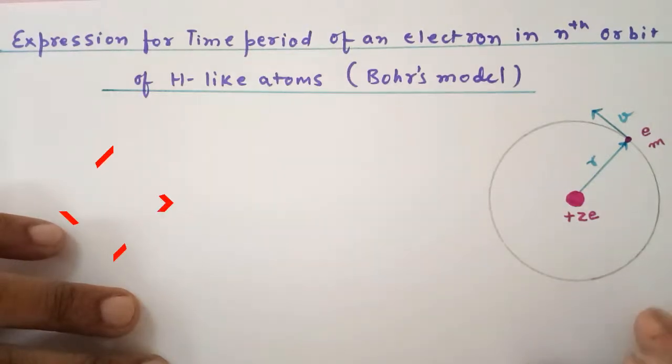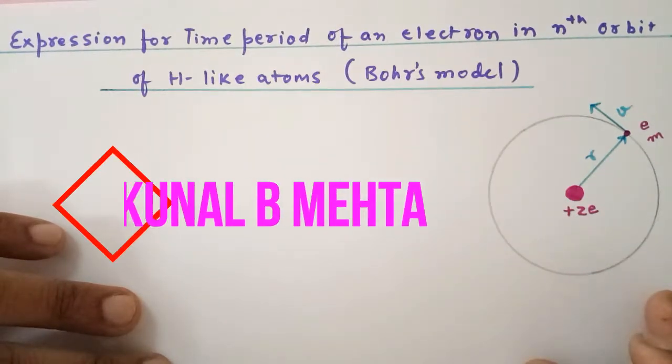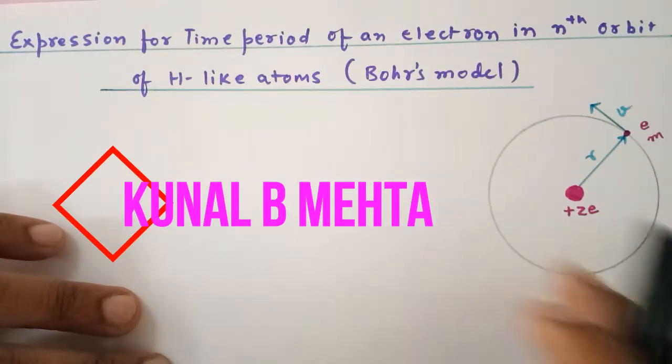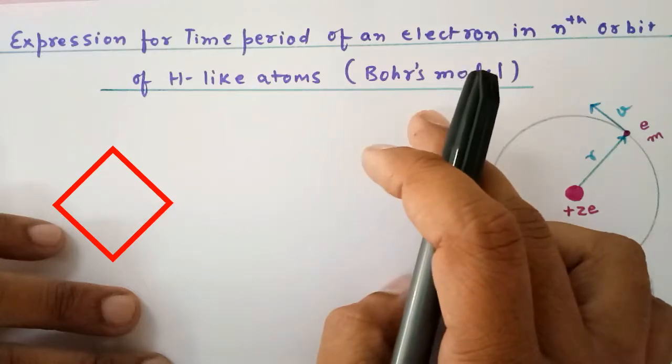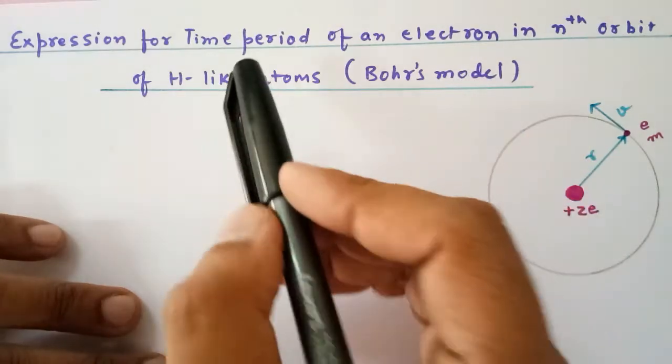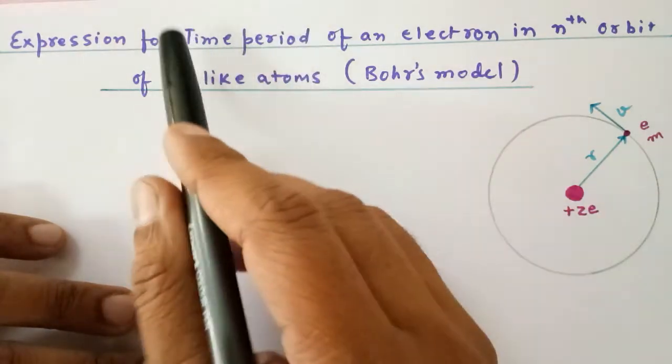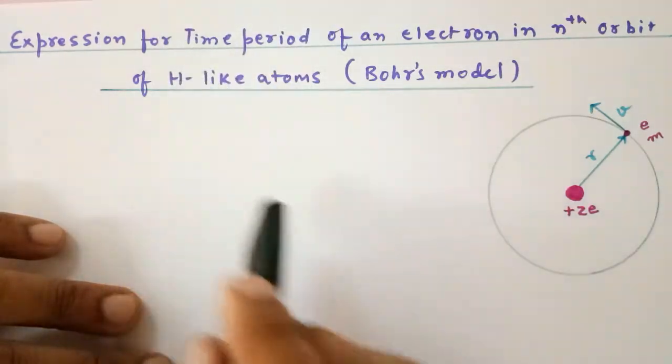Hello scientific people, again a lecture continuation series on Bohr's model, and today we are going to derive an expression for the time period of an electron.